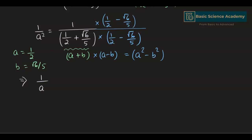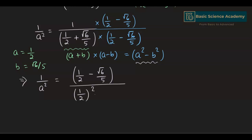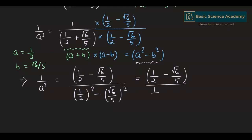Now the denominator is in the form (a+b)(a−b) which equals a² minus b². Applying this formula gives us 1/a² equals (1/2 minus root 6/5) in the numerator, and in the denominator we have (1/2)² minus (root 6/5)², which is 1/4 minus 6/25.